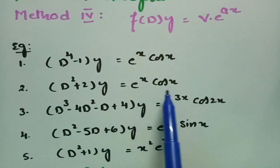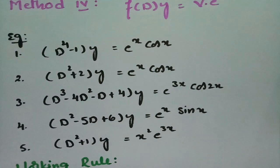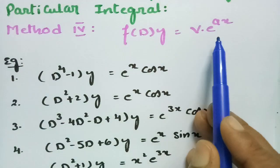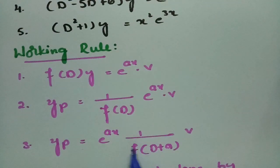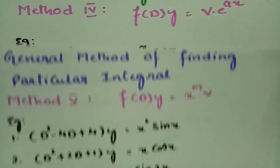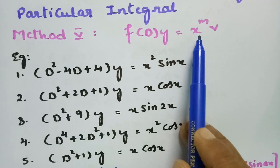By seeing any combination of e^(ax) multiplied by something, you can identify this as Method 4. We bring e^(ax) aside by replacing D with D + a, and then v — which may be exponential, trigonometric, or algebraic — is solved using one of the first three methods. The fifth method handles combinations of the form x^m · v.